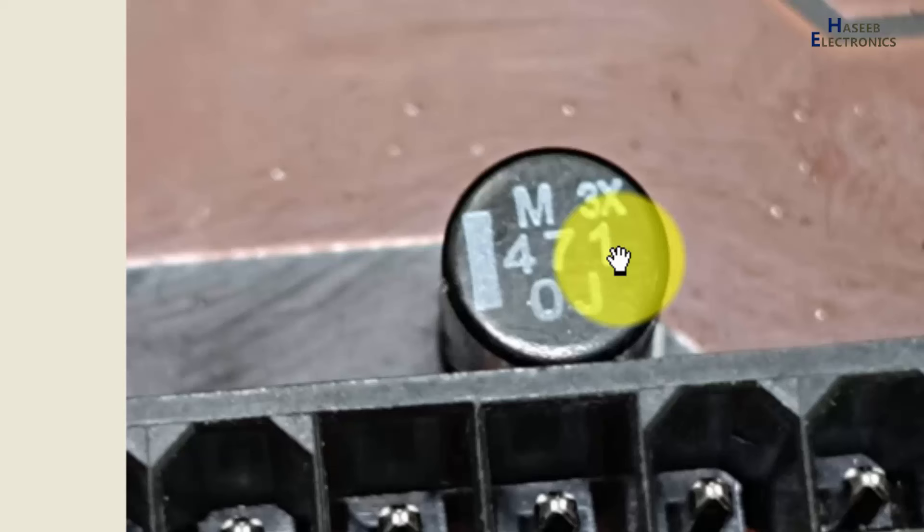If here is four seven two, that will be four seven double zero—four thousand seven hundred microfarad. If here is four seven zero, that means four seven zero. Zero means we will not add zero. If here is one, that means we need to add one zero.